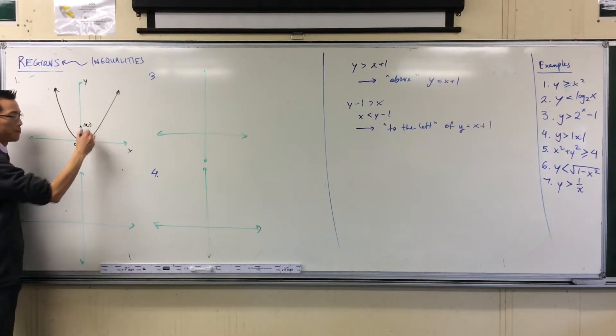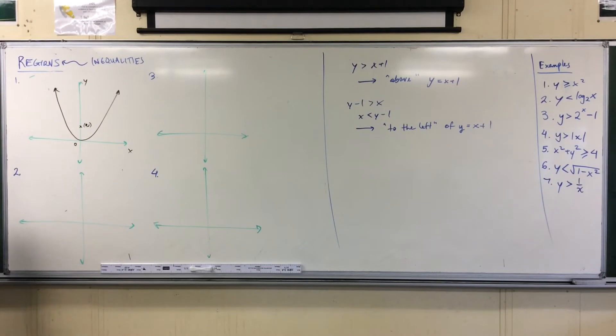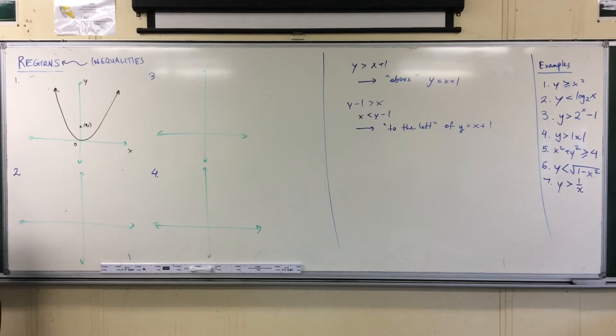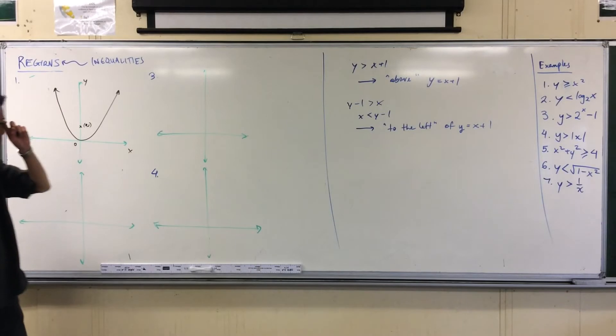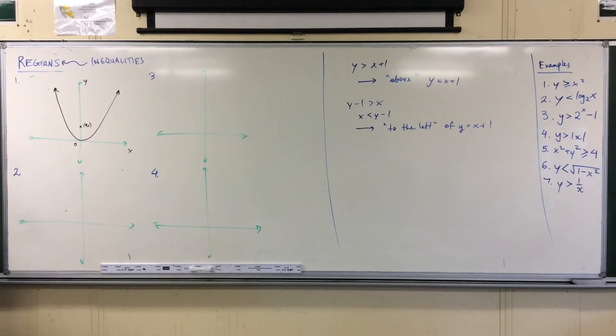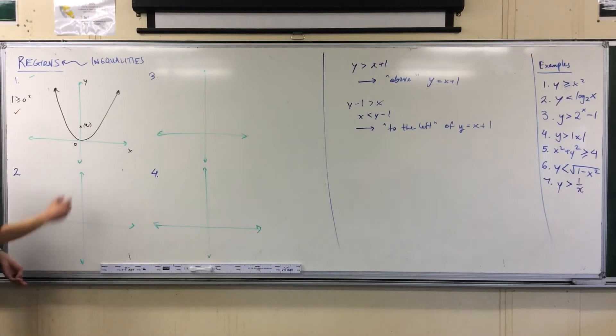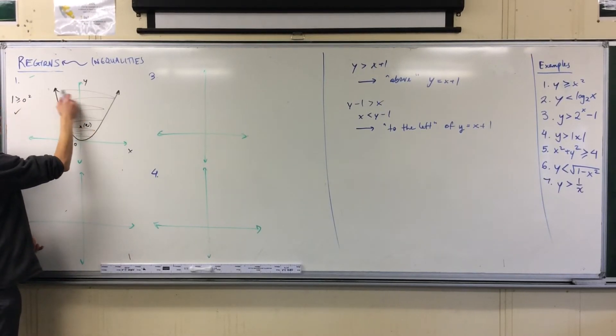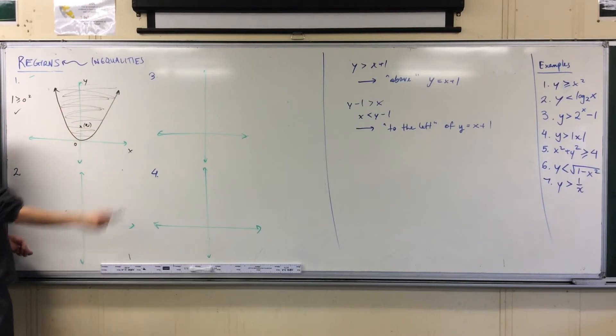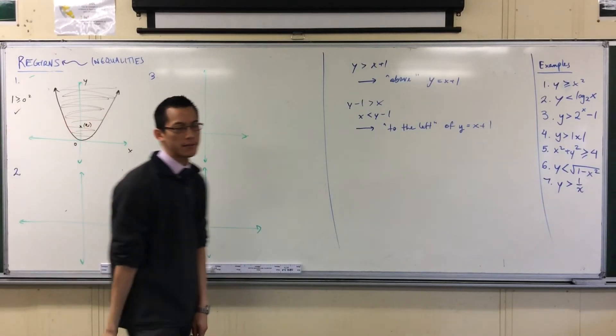That's the easiest value I can think of. Now let's have a go. Is y, which is one, is it greater than or equal to zero squared? Yes! So therefore, our point that we've chosen is in the region we're after. Therefore, all of these points that are bound inside this parabola, or I should say above, they're all included. That's it. That's all you have to do.